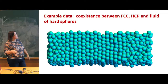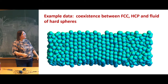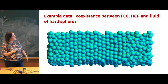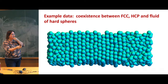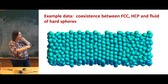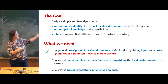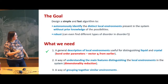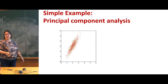Let's start with a whole system because it's always nice to have pictures in your head as you walk through algorithms. Here's a phase coexistence between a fluid and two different crystals — one is face-centered cubic and one is hexagonal close-packed. As we go through the various kinds of algorithms, we'll come back to this image. We would like the algorithm to be able to spontaneously identify these different regions. We start off with a description of local environments using bond order parameters, then look at dimensionality reduction.